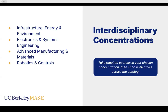There are four interdisciplinary concentrations, each with its own requirements, and then electives that you can choose from our list of courses. The concentrations are: Infrastructure, Energy and Environment; Electronics and Systems Engineering; Advanced Manufacturing and Materials; and Robotics and Controls. You take the required courses in your chosen concentration. There's a course catalog showing all 33 courses, and you can filter by concentration to see what each concentration requires.